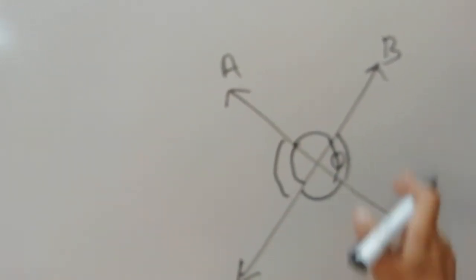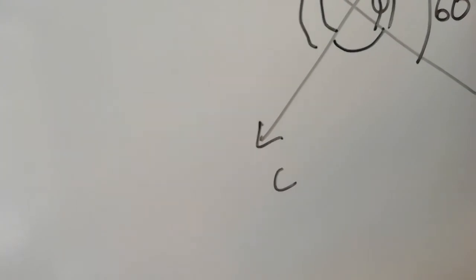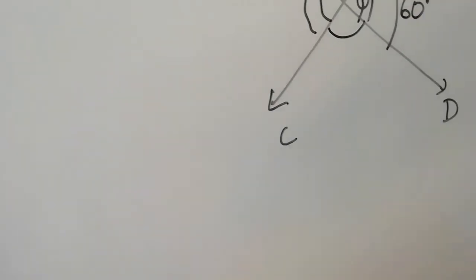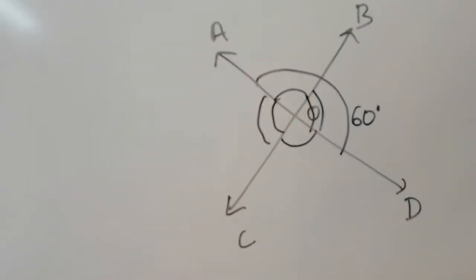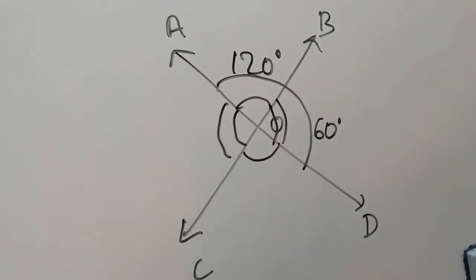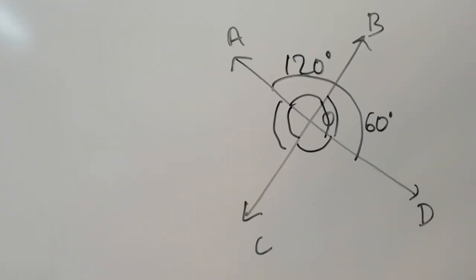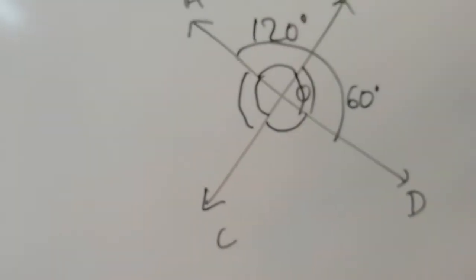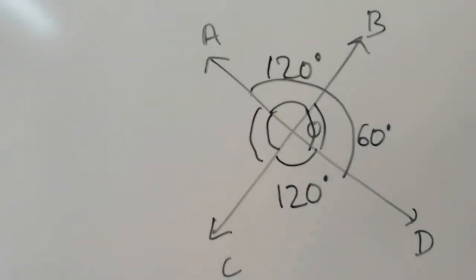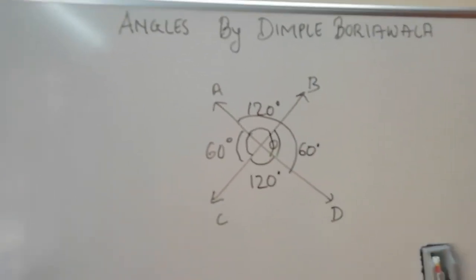These pairs on a straight line are called linear angles. If angle BOD is 60 degrees, then angle BOA is 120 degrees because they are linear angles on a straight line — 180 minus 60 equals 120. Since BOA is 120 degrees, the vertically opposite angle DOC is also 120 degrees. And since BOD is 60 degrees, the vertically opposite angle AOC is also 60 degrees.